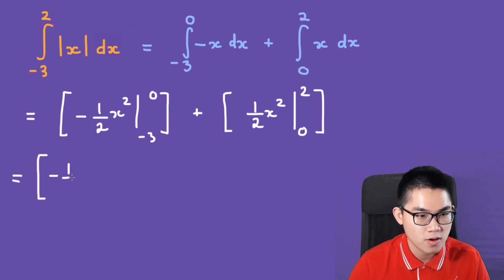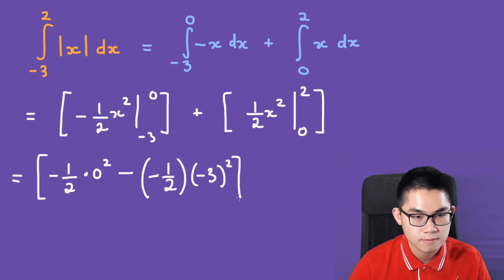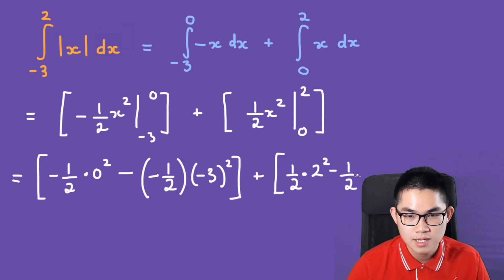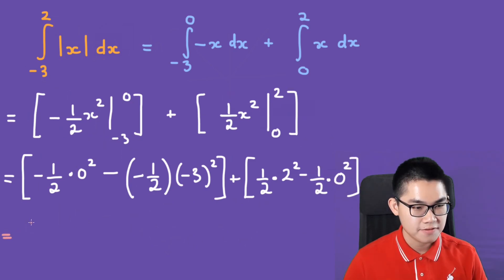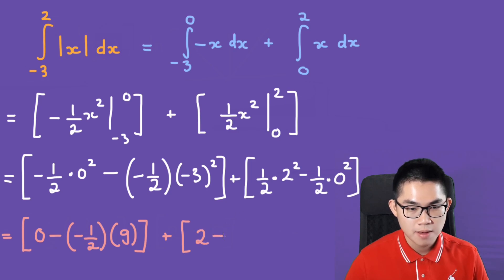And the last step is to plug these numbers in. So, here you have negative 1 over 2 times 0 squared, minus negative 1 over 2 times negative 3 squared, plus 1 over 2 times 2 squared, minus 1 over 2 times 0 squared. We have negative 1 over 2 times 0, which is 0, minus negative 1 over 2 times 9, plus 1 over 2 times 4, which is positive 2, minus 0.